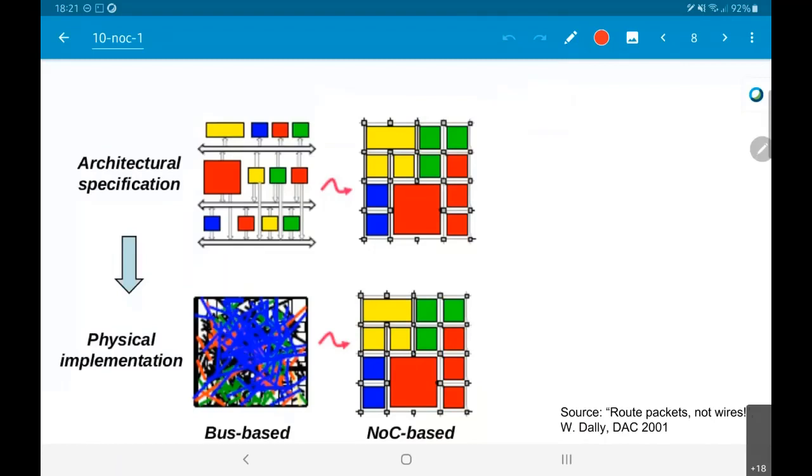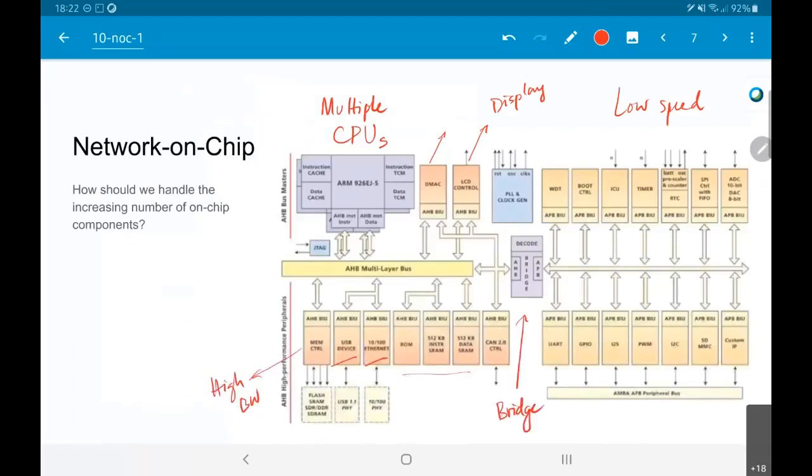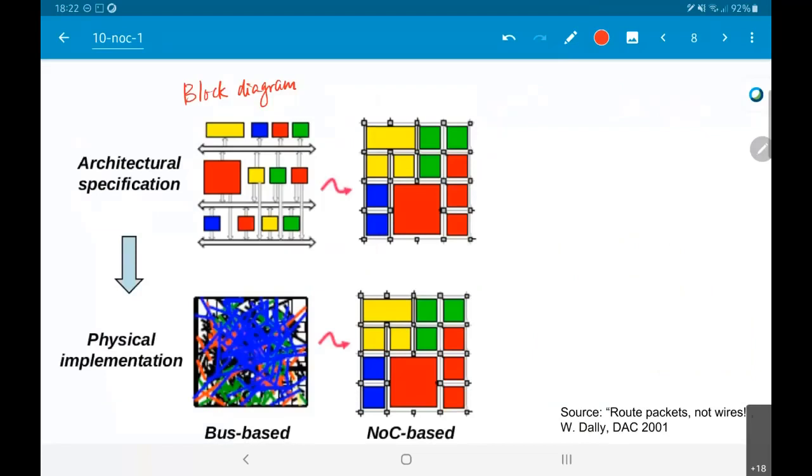What was the idea? William Daly, who is the CTO of NVIDIA at the moment and a professor at Stanford, said that typically what you have is you start off with an architecture specification. This is basically the block diagram. It looks very neat, similar to what we have over here. You have the buses, all the things connecting off the bus. That's the architectural specification.